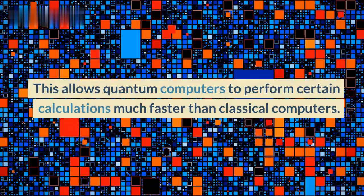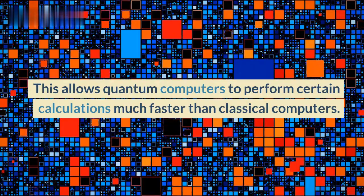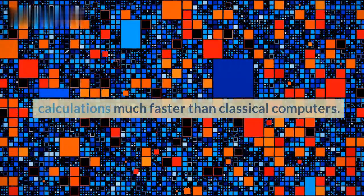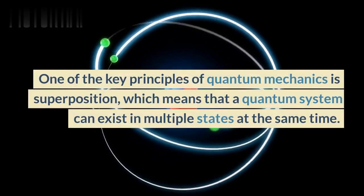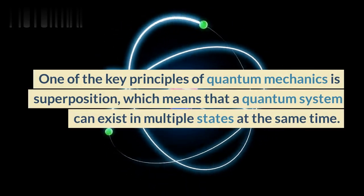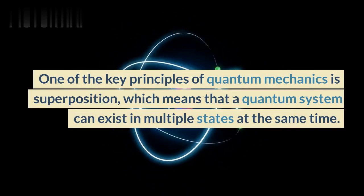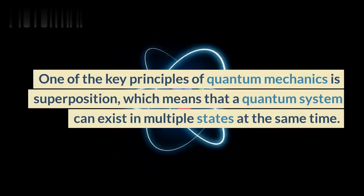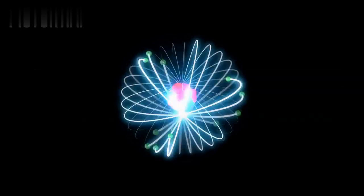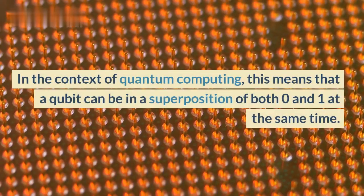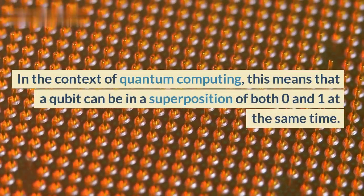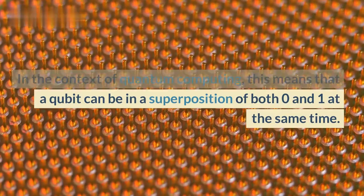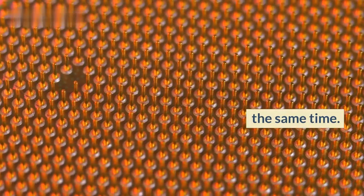This allows quantum computers to perform certain calculations much faster than classical computers. One of the key principles of quantum mechanics is superposition, which means that a quantum system can exist in multiple states at the same time. In the context of quantum computing, this means that a qubit can be in a superposition of both zero and one at the same time.